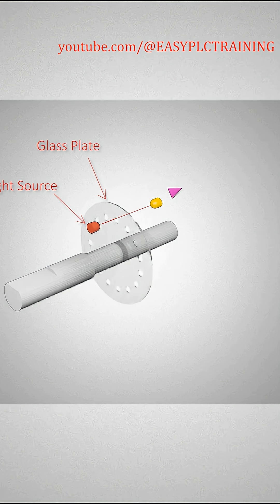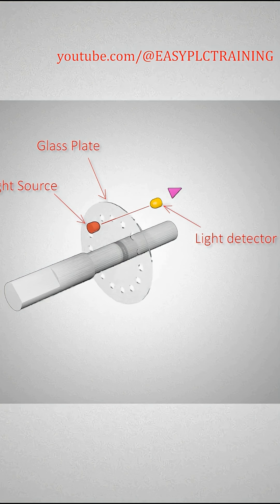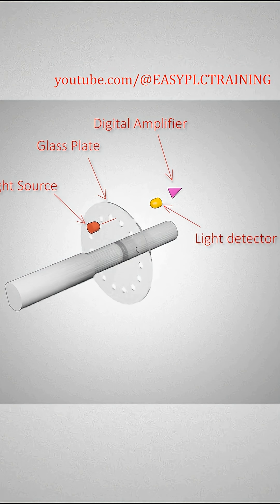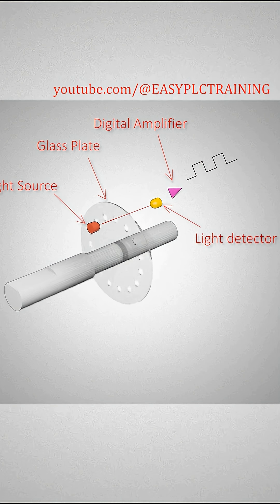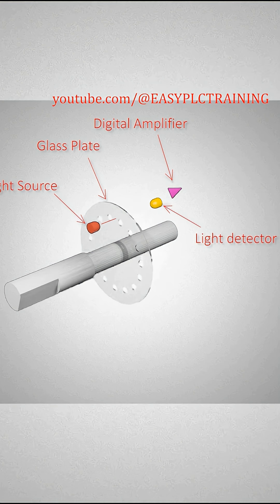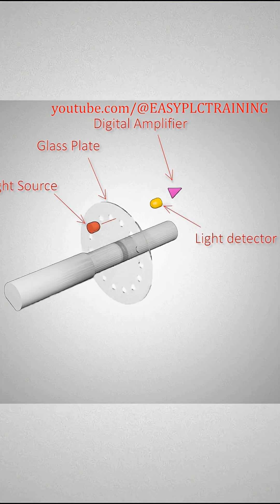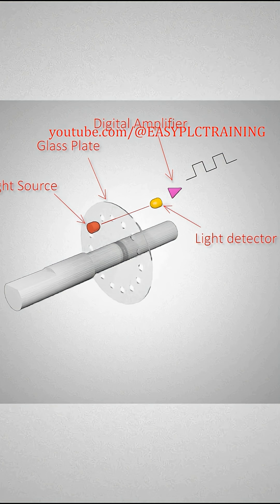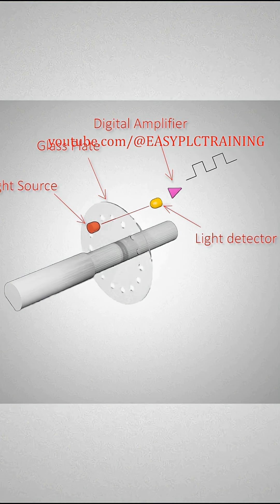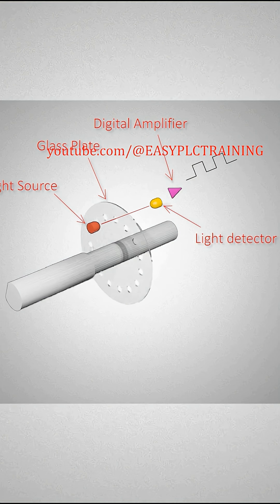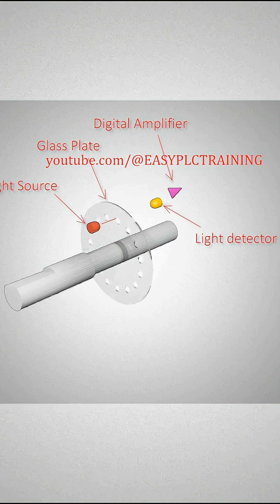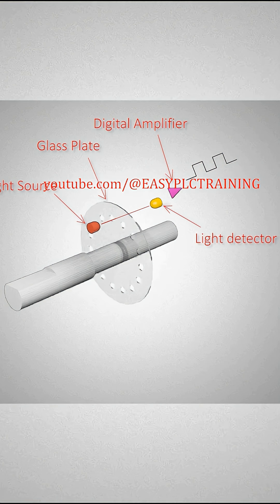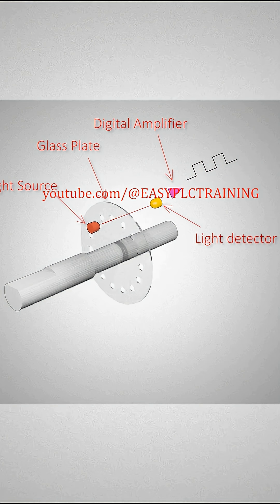Near the glass plate, you will find a light source on one side and a light detector circuit on the opposite side. This light source continuously emits a beam of light. As the encoder shaft rotates, the glass plate also rotates. As soon as the light beam and a hole in the glass plate become aligned, the light beam passes through the hole and the light detector picks up this signal. This signal is then amplified and converted into a digital pulse output. This is a simple example of how an encoder works and what's inside it.